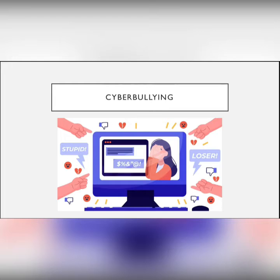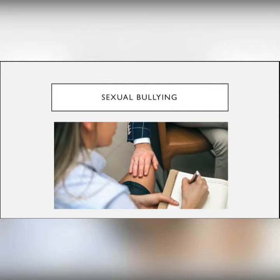Cyberbullying, also known as online bullying. In this case, the aggressor uses social networks and other technological resources to harass the victim. These communication channels allow harassment to spread much faster. Number five, sexual bullying. Sexual bullying is a type of harassment of sexual connotation. In the most serious cases, girls are usually the main victims, as well as homosexual individuals.